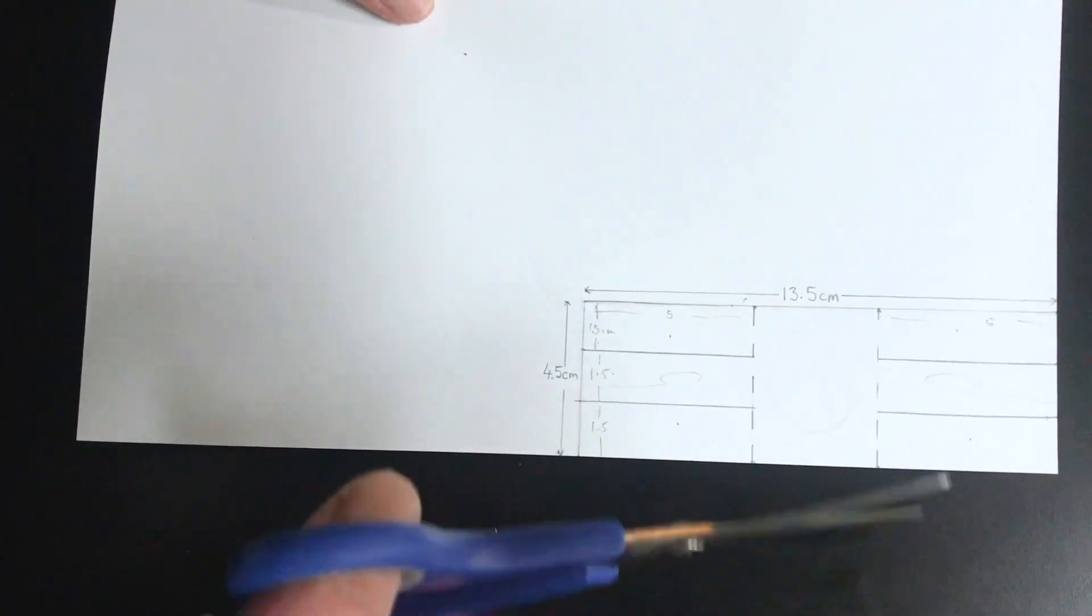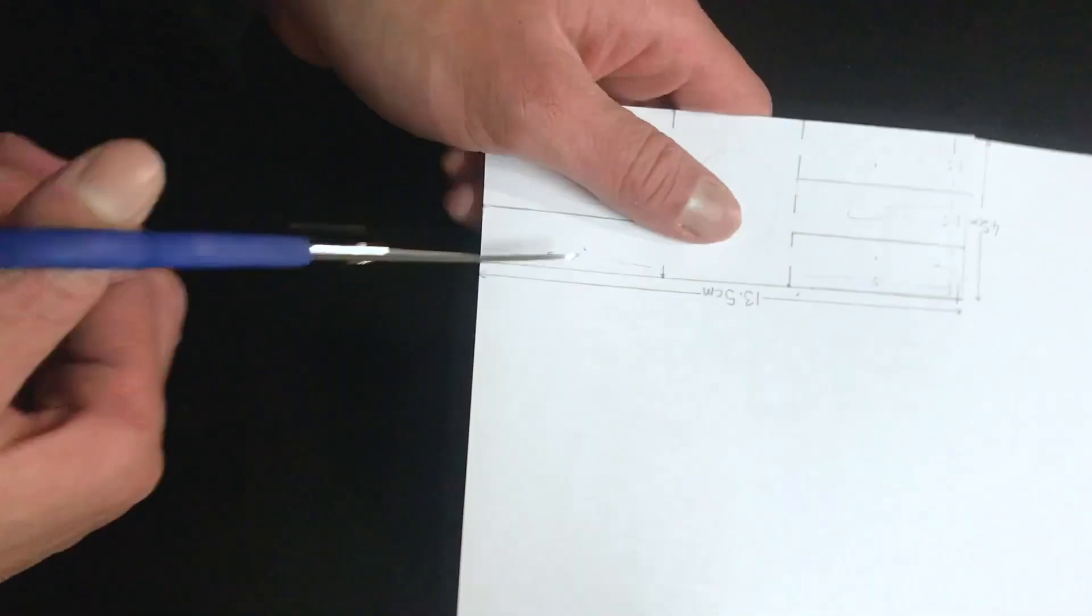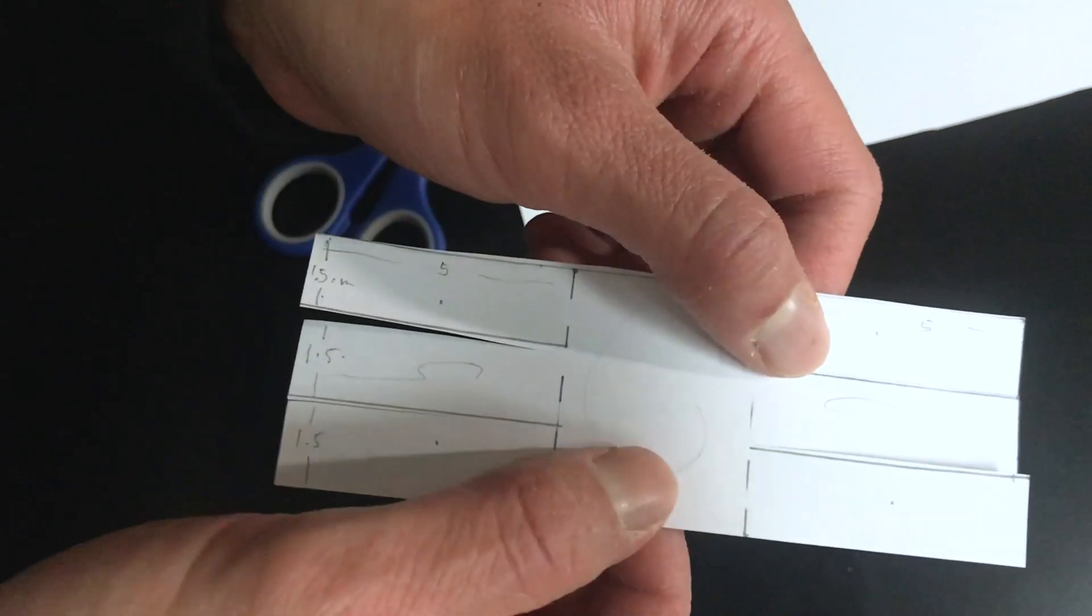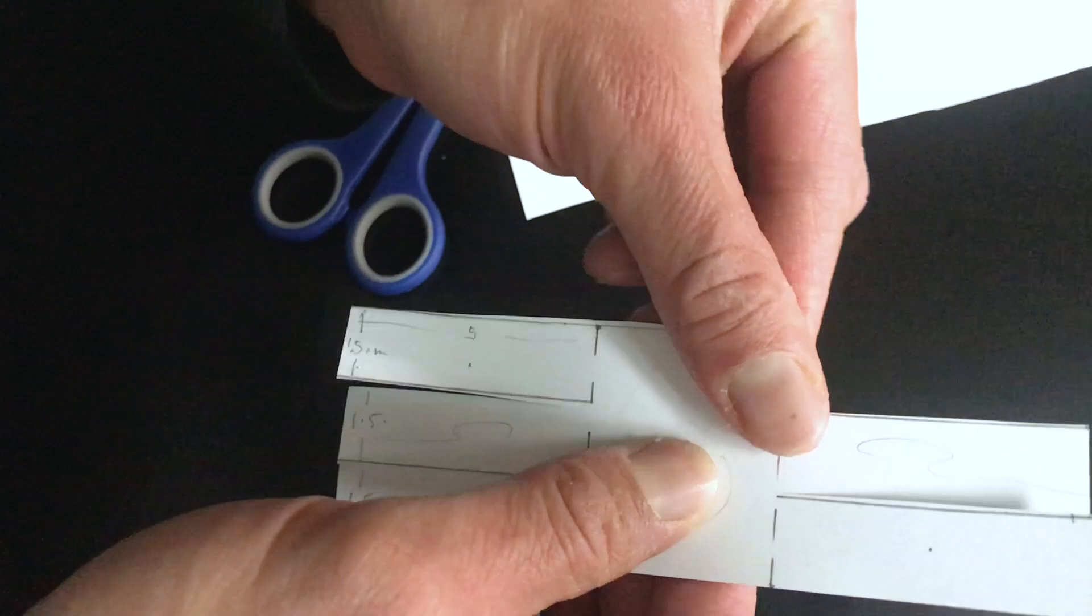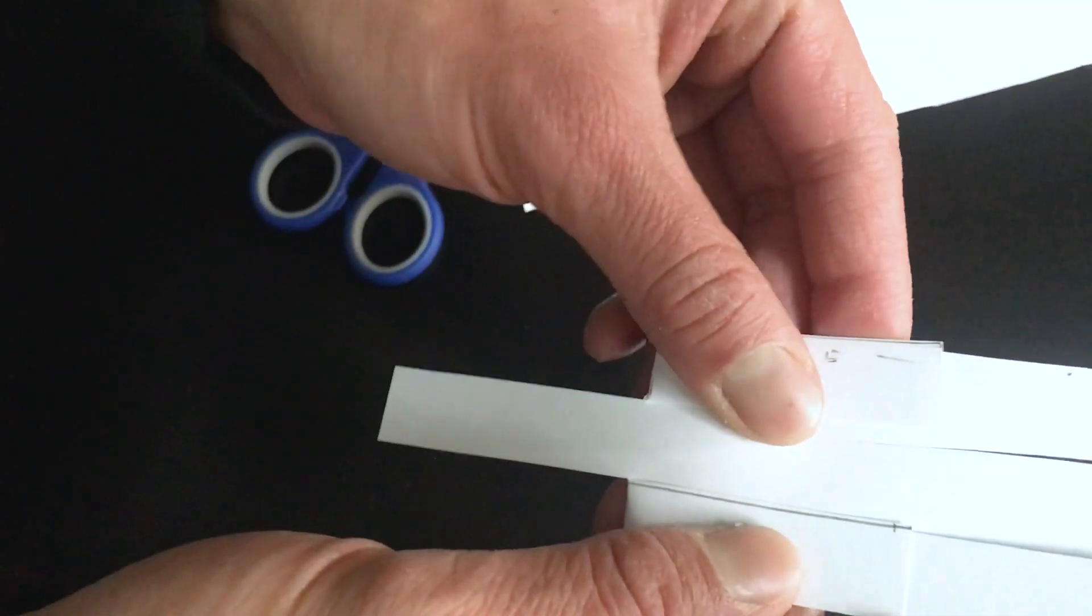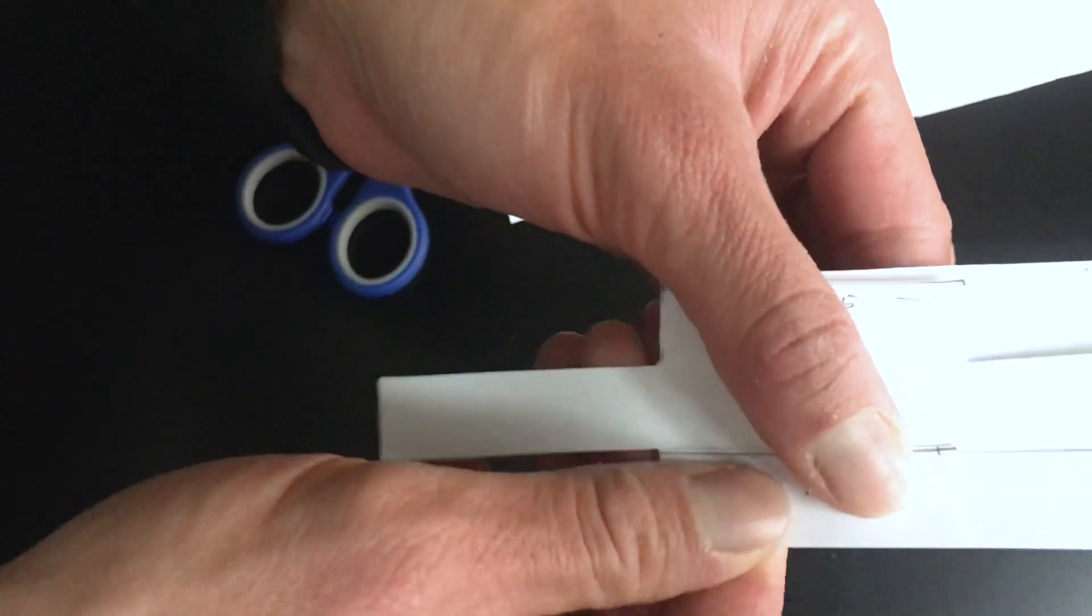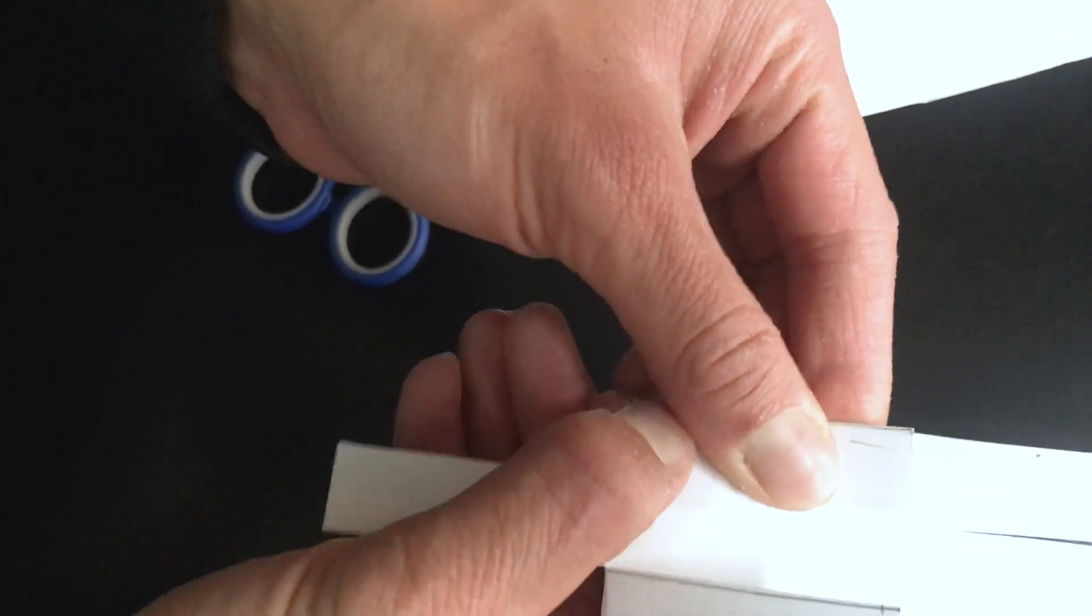Now that we have drawn the template, let's cut it out. So now I'm going to fold them downwards. You want to make sure that when you fold it, the edge of the leg lines up with the body. That way you get a really nice straight fold.